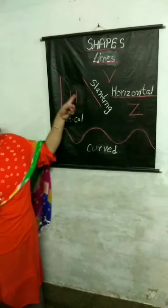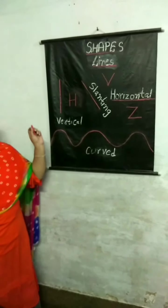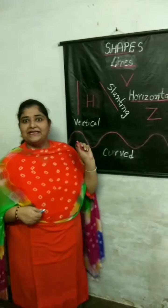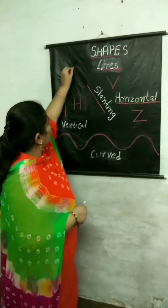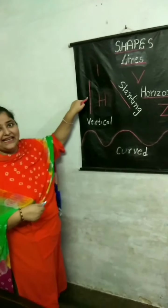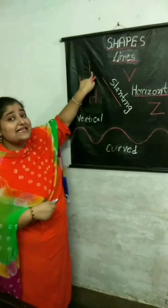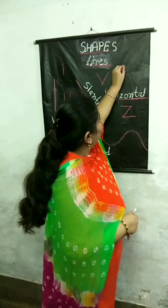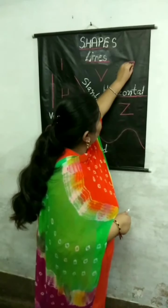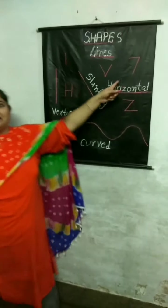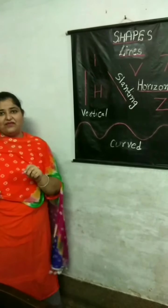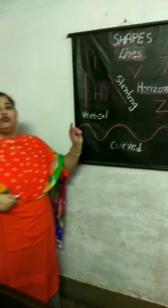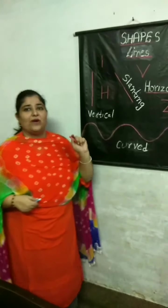So, my dear students, with the help of these lines we can draw alphabets and even write numbers. For example, you can write one with the help of a standing line. If you have to write number 7, you will draw a sleeping line and a slanting line. Now have you understood that with these lines we can write alphabets as well as numbers?